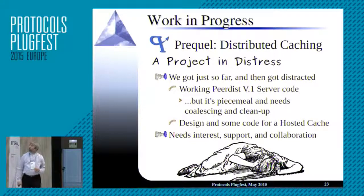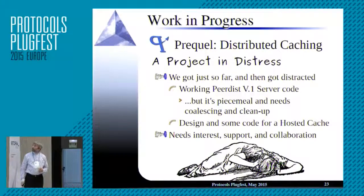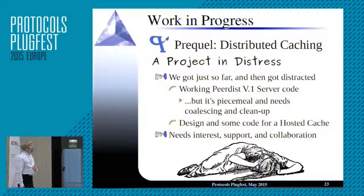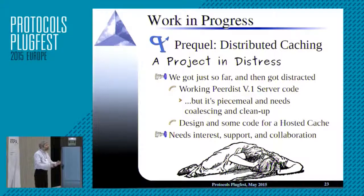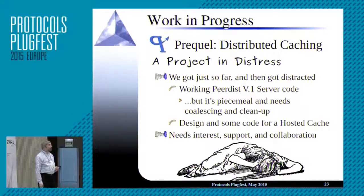Prequel is that distributed caching system — a project I started a while ago. I got to the point of working code, good working code, and then got distracted by Carnival. It's a project in distress — we got just so far and then stopped, I needed more input from the world. The current code is good, it needs some cleaning up and coalescing. There's a design for a piece called a hosted cache, which could be a very useful tool to have in the open source world. We're working on that as time permits. What we need here is interest, support, and collaboration.